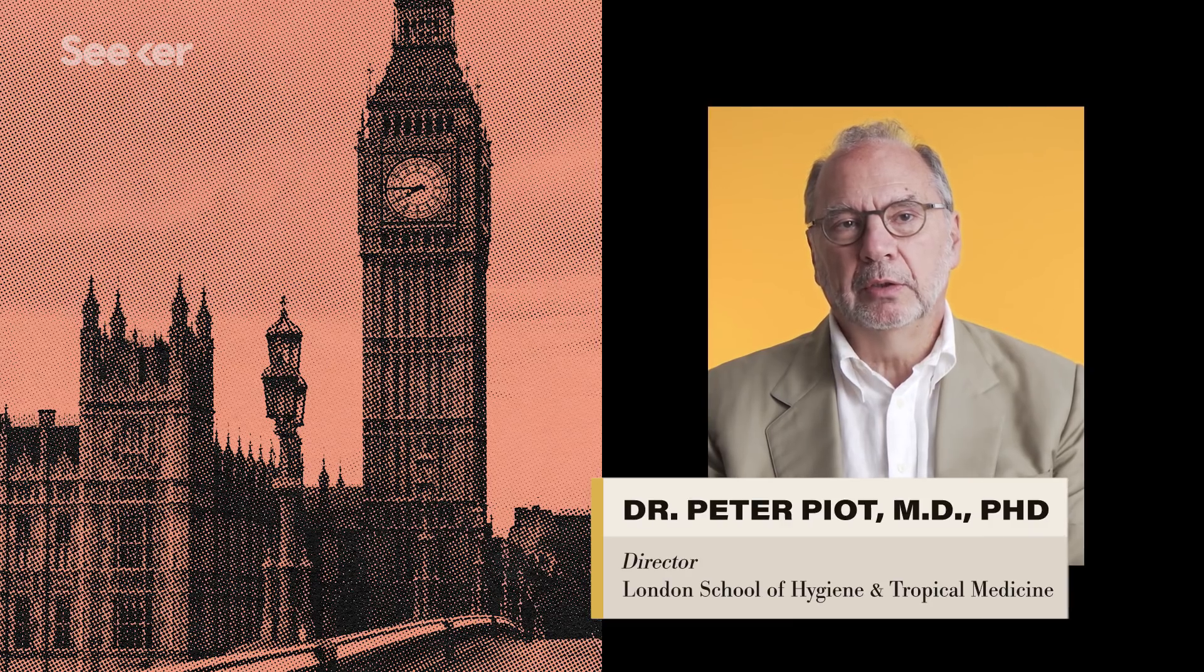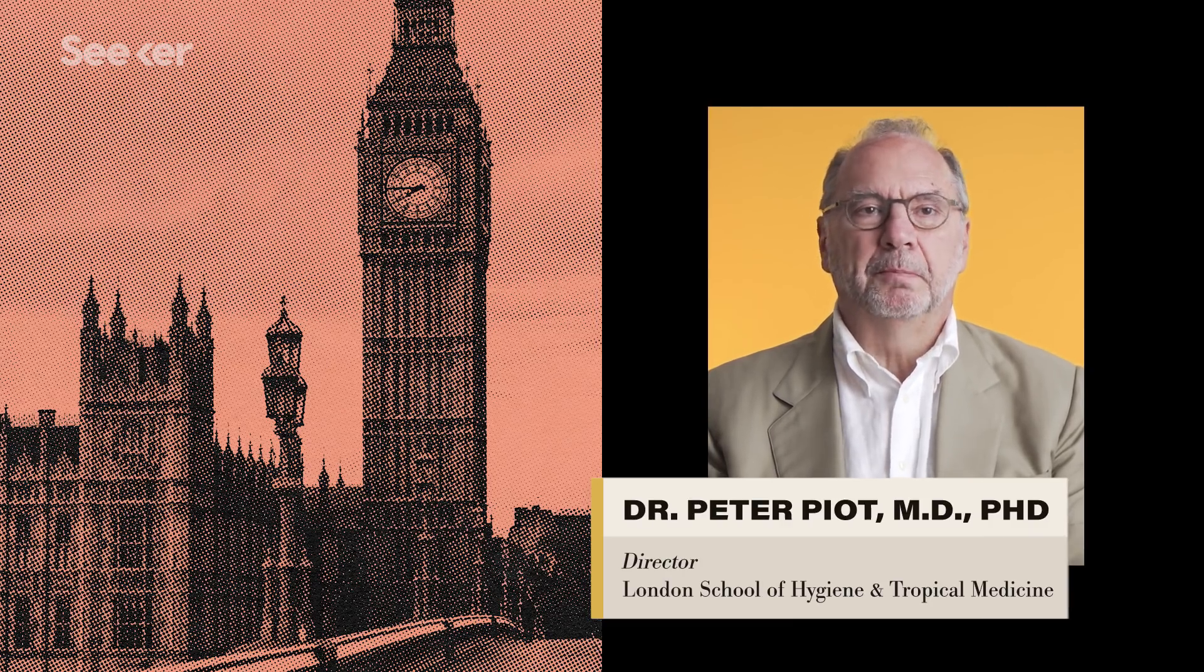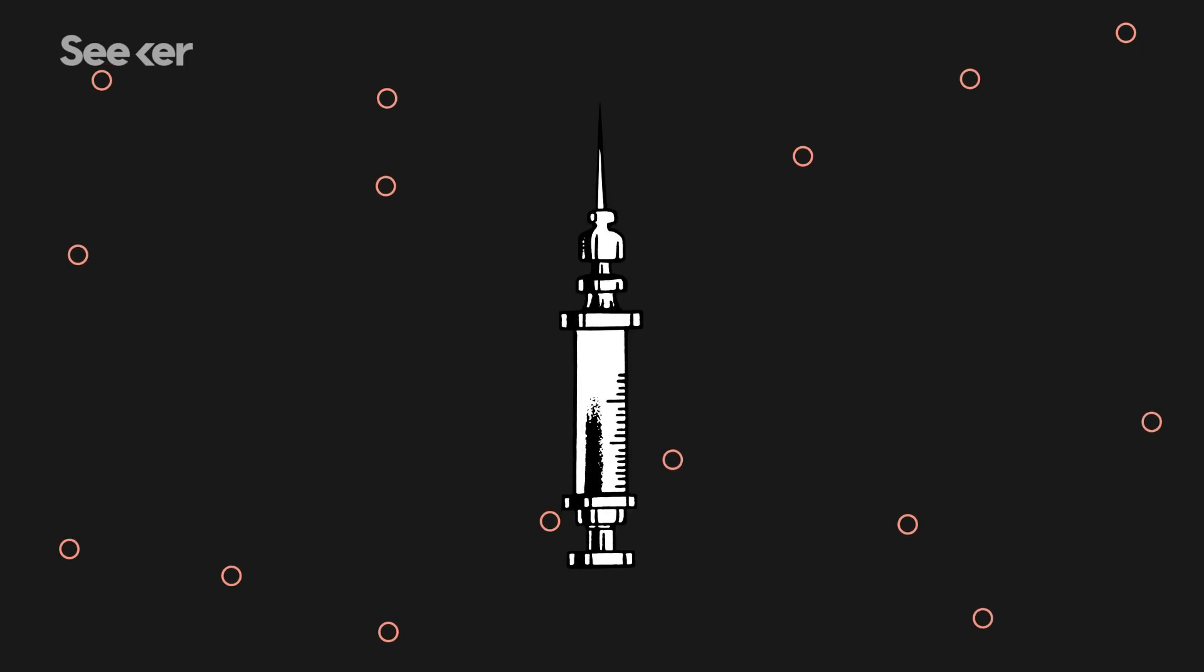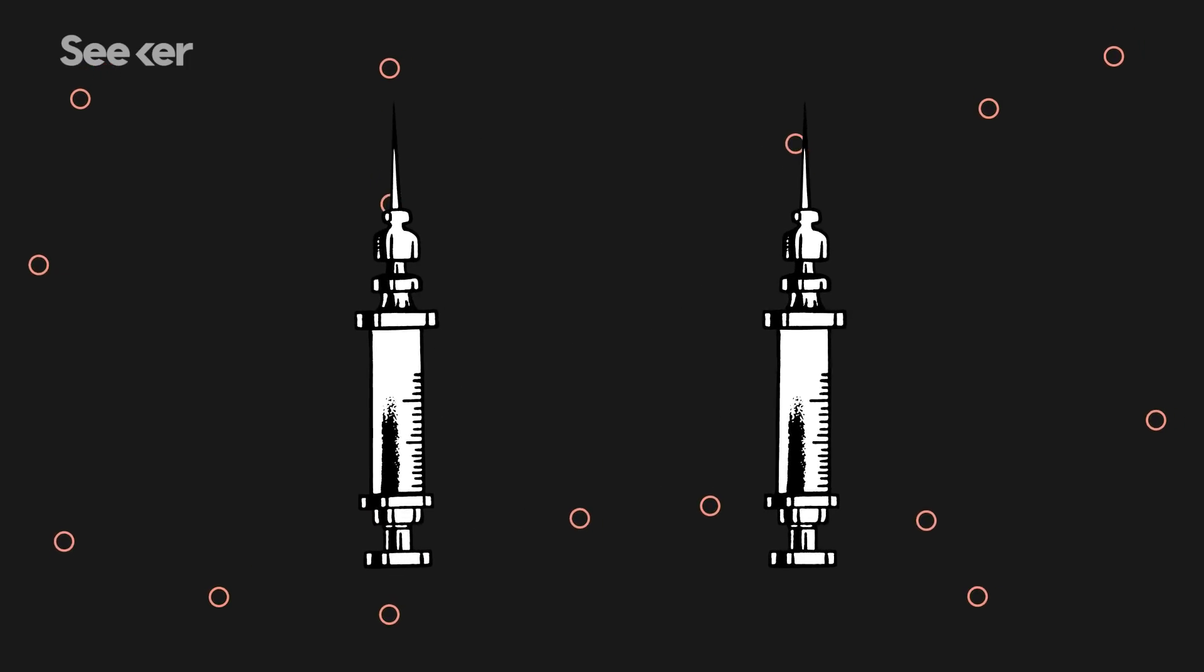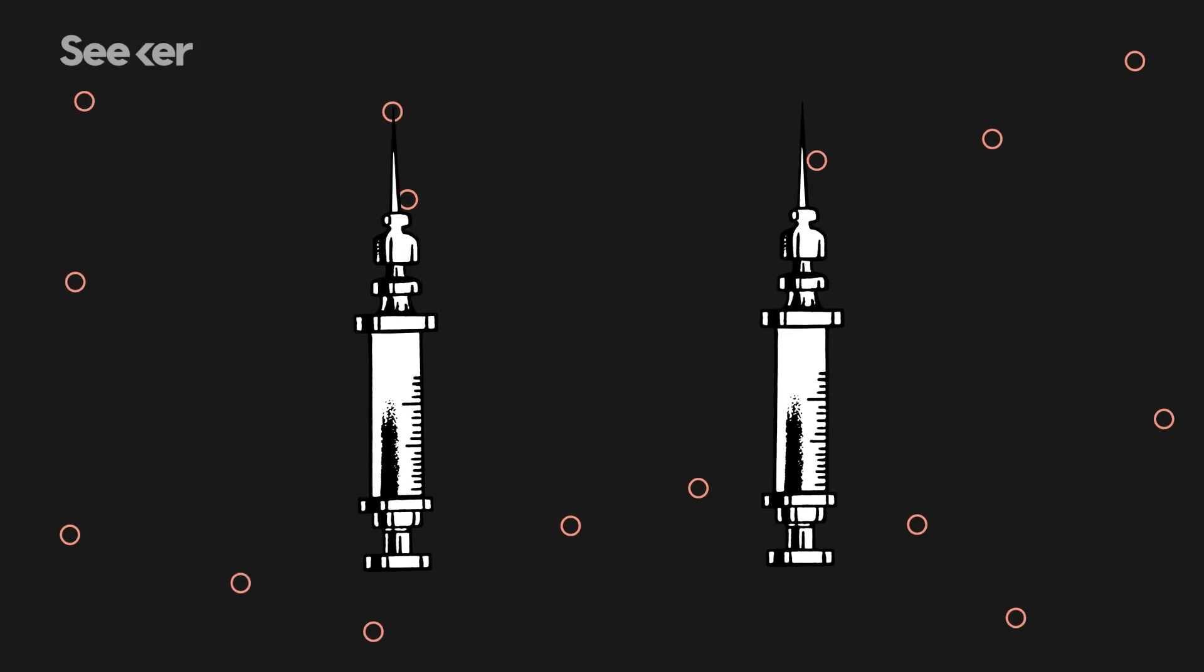I'm Peter Piot, and I'm the director of the London School of Hygiene and Tropical Medicine. I was part of the team that isolated the Ebola virus for the first time. It may surprise you that there are not one, but two exciting experimental vaccines in use in the DRC, and more in the works.